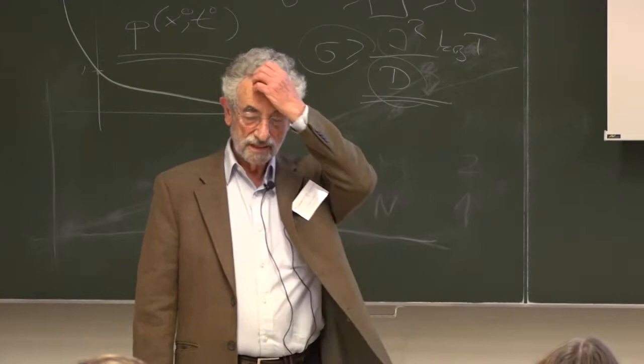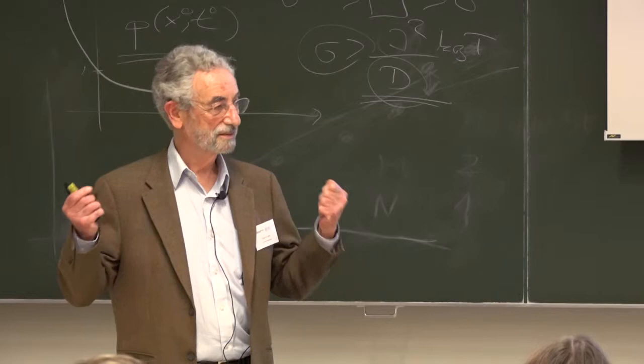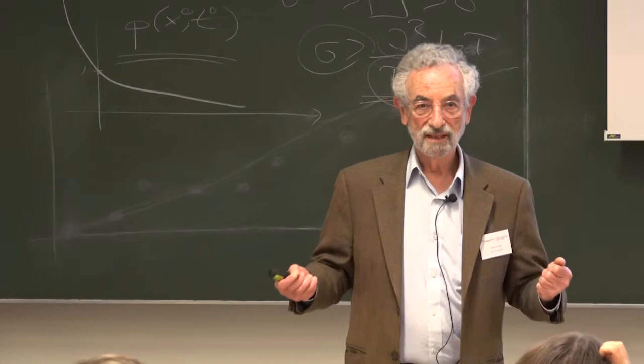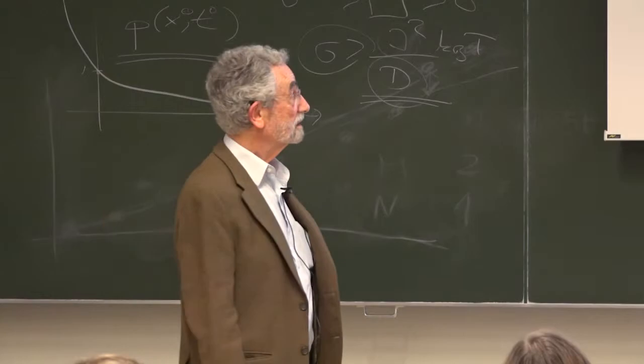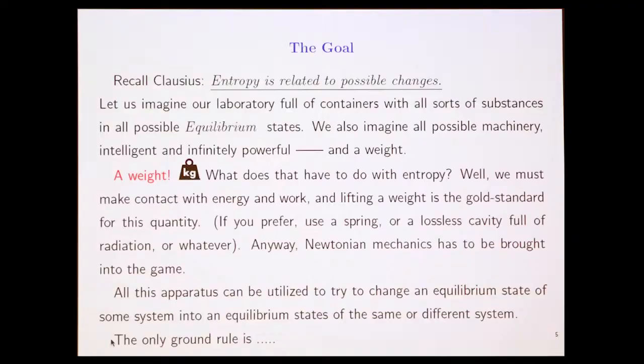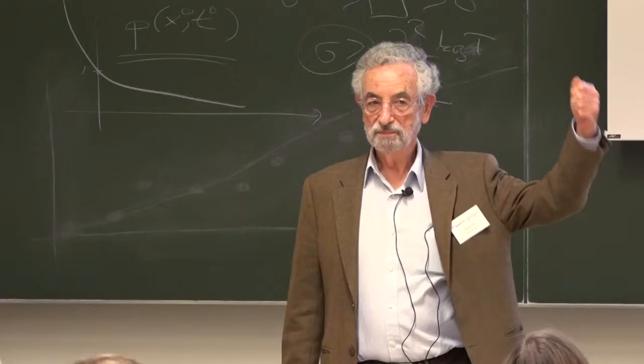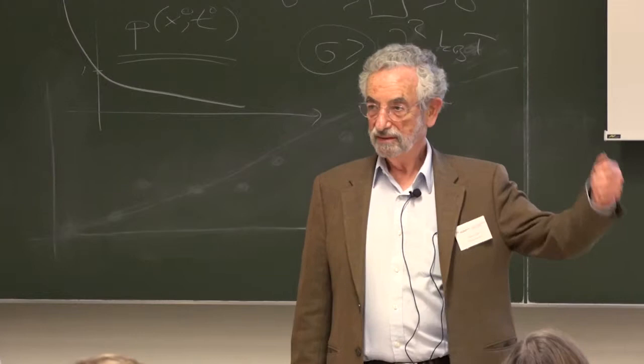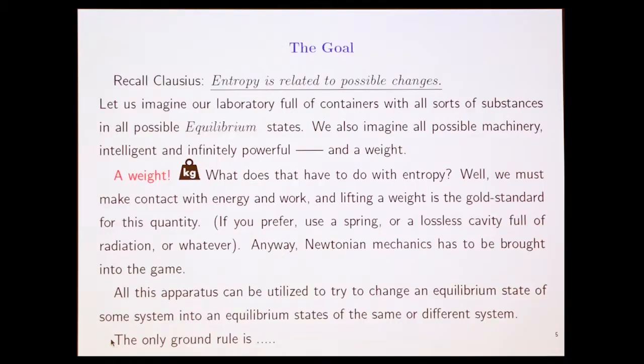Well, basically, in order to measure entropy, you have to have a standard meter, like a meter stick, some standard piece of energy to which you're going to compare anything else. If I tell you the energy of a photon is so and so, what does that mean? Well, the something else is going to be, let's say, moving a weight in a gravitational field. That will be our standard measure of energy. Everything will be related to how much we can move a weight up. Or if you don't like that, you can have a spring, or a lossless cavity full of radiation, or whatever you want. So there's going to be one standard of energy.